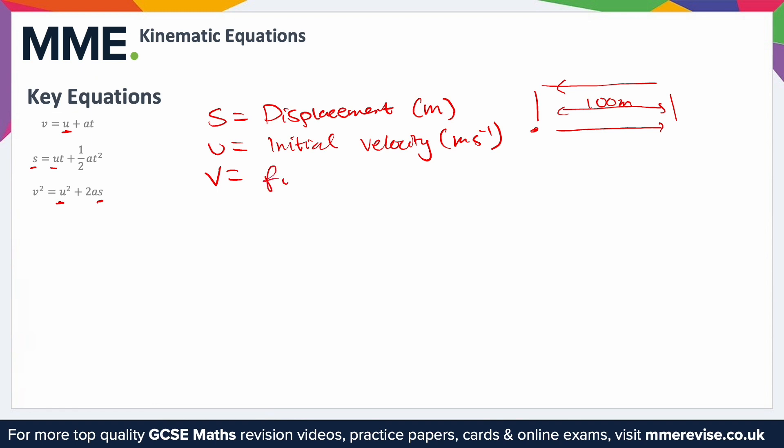V is the final velocity. I'm sure you can guess what this one is. This is just the velocity at the end of the time period. So say you're analyzing a particle over a period of 10 seconds, then this is at t equals 10. Again, measured in meters per second because it's a velocity. You can see that in this equation and this equation here.